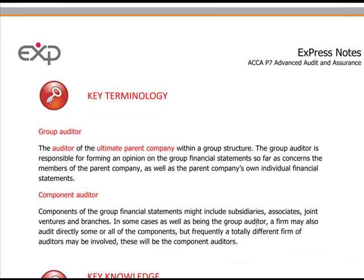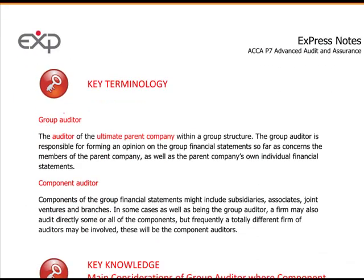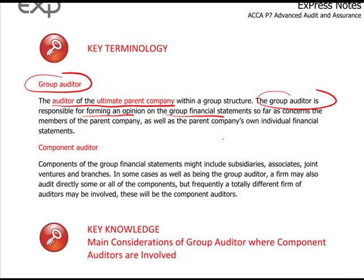Key terminology. Group auditor: the group auditor is the auditor of the ultimate parent company — the parent company being that at the top of the group structure. The group auditor is responsible for forming an opinion on the group financial statements, as far as concerns the members of the parent company. So it's the group auditor who signs off the group financial statements. Component auditors are the auditors of subsidiaries, associates, joint ventures and branches — i.e. lower down the chain.